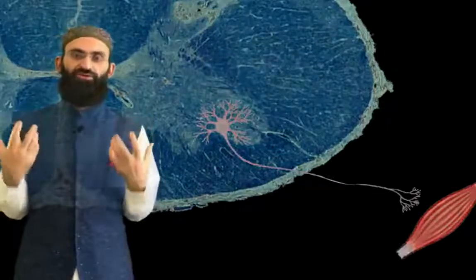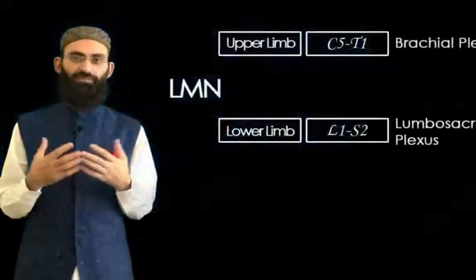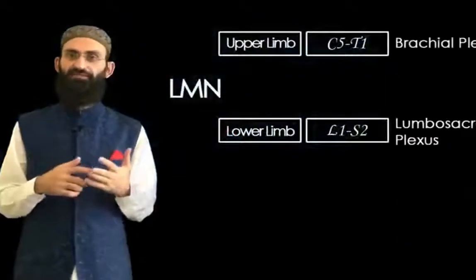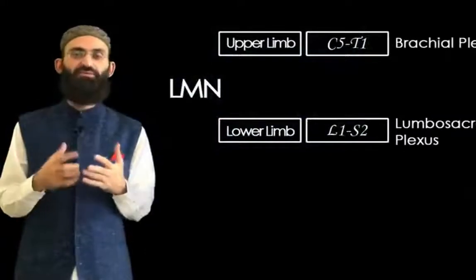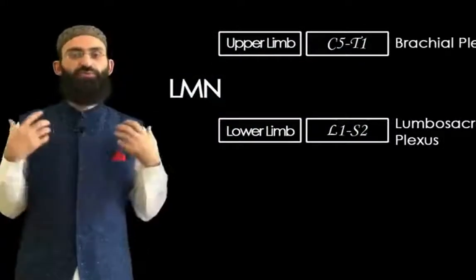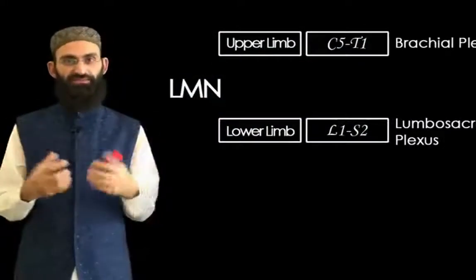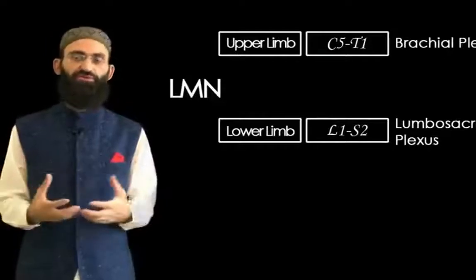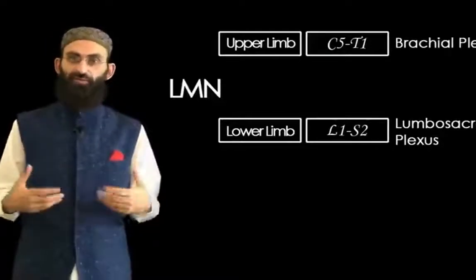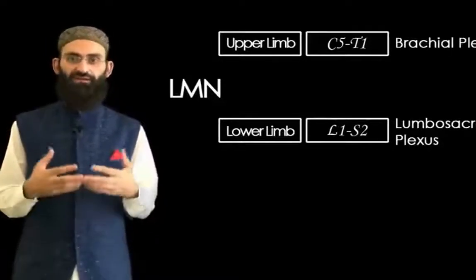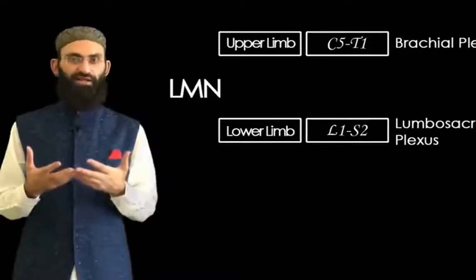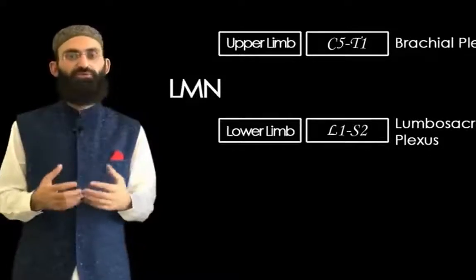The lower motor neuron supply of the upper limb comes through C5, C6, C7, C8, and T1 spinal segments through the brachial plexus. While the lower motor neuron supply of the lower limbs comes through L1, L2, L3, and L4 spinal segments through the lumbar plexus. Now we will discuss in greater detail the concepts of upper and lower motor neurons.